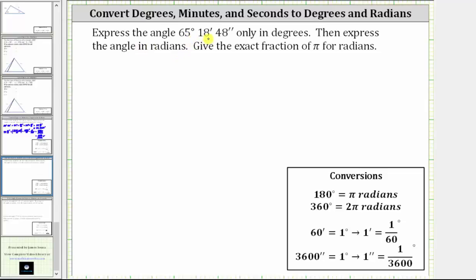We're asked to express the angle 65 degrees, 18 minutes, 48 seconds, only in degrees, then express the angle in radians as an exact fraction of pi.